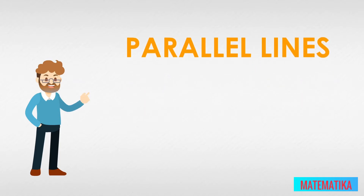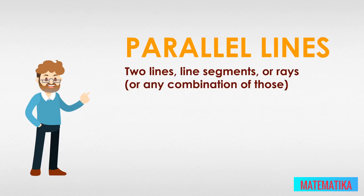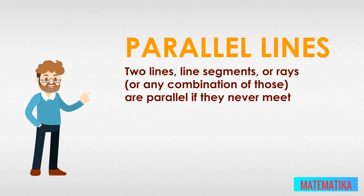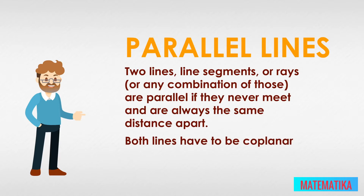What are parallel lines? Two lines, line segments, or rays, or any combination of those, are parallel if they never meet and are always the same distance apart. Both lines have to be coplanar, or in the same plane.